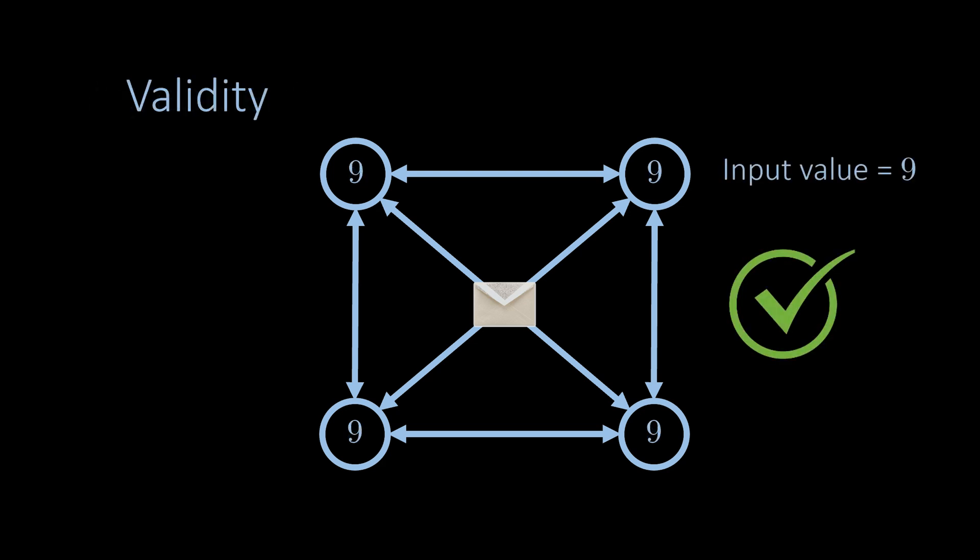The second property is called validity. The algorithm has the validity property if the nodes decide on a value that is the input value of a node — that is, one node must have had this value at the beginning of the execution. Note that there are also different notions of validity; for example, if all nodes have the same input value, then the nodes must decide on this value.